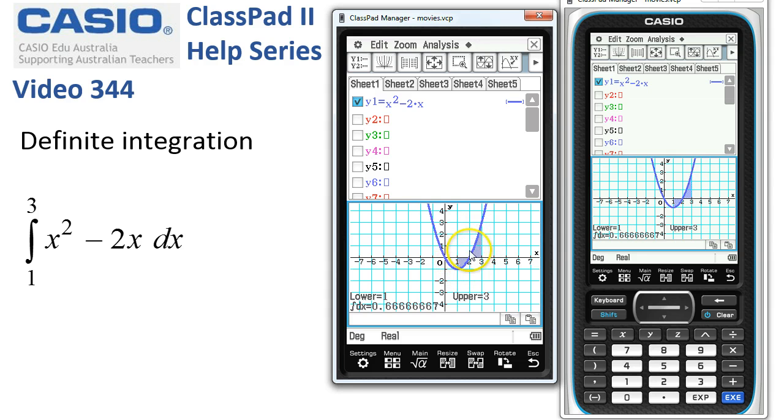If you wanted to find the area of this, we'd have to split the integral from 1 to 2, and then from 2 to 3, and then add together the absolute value of those two areas.